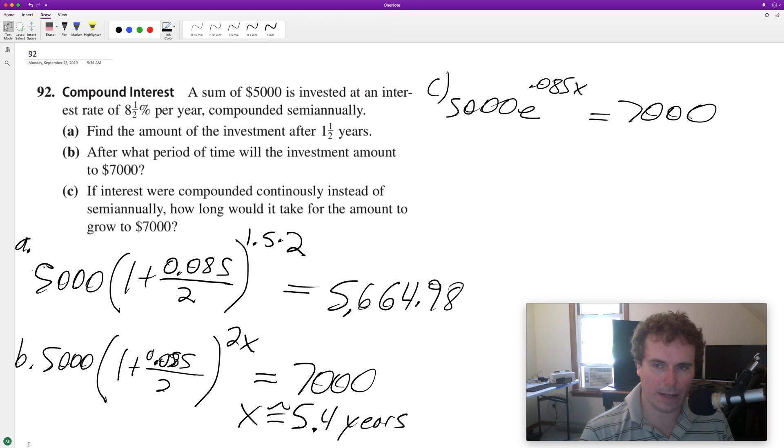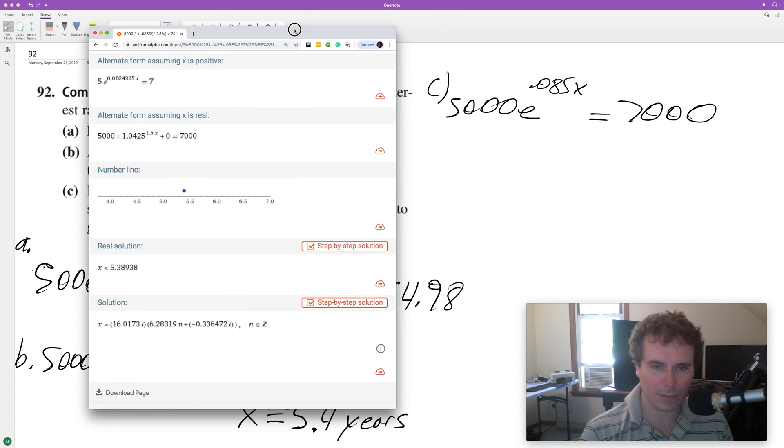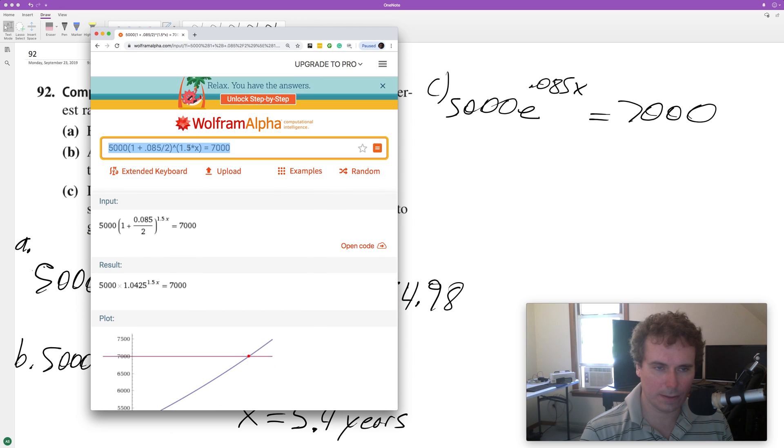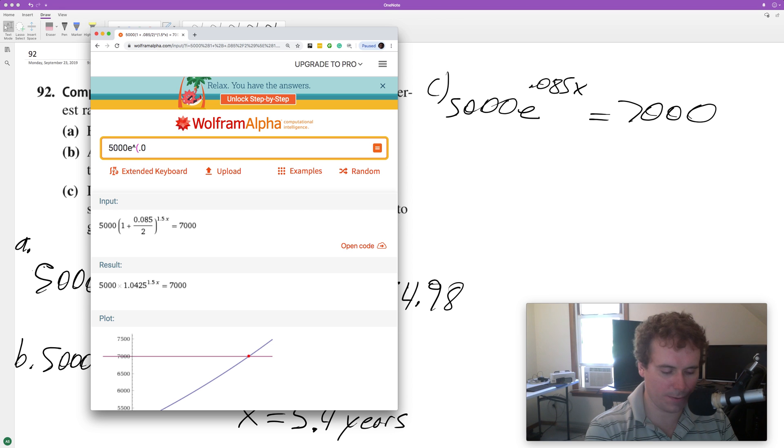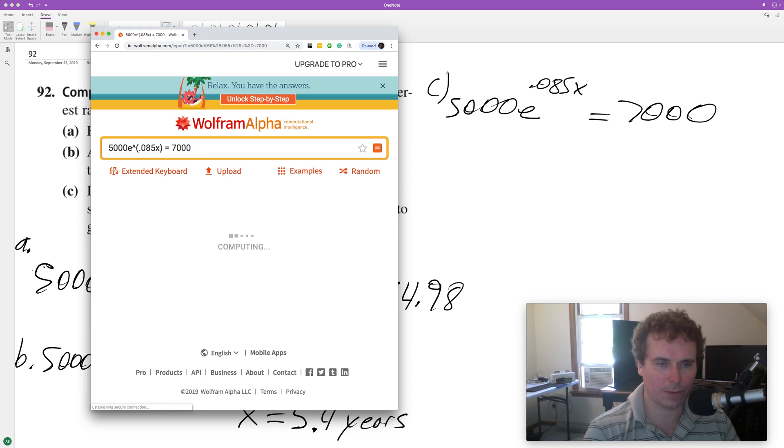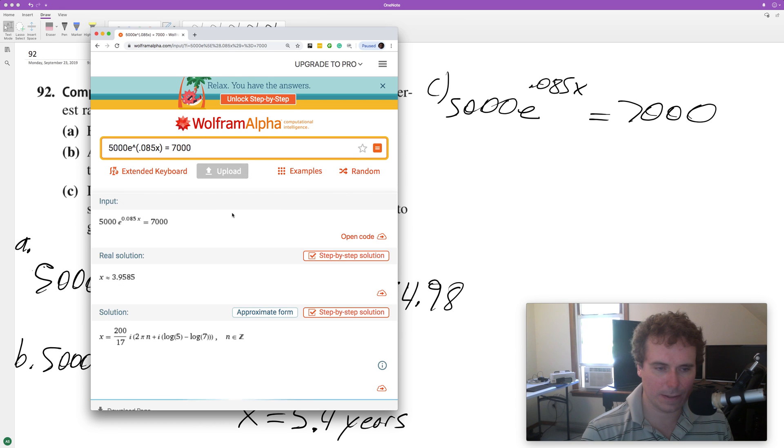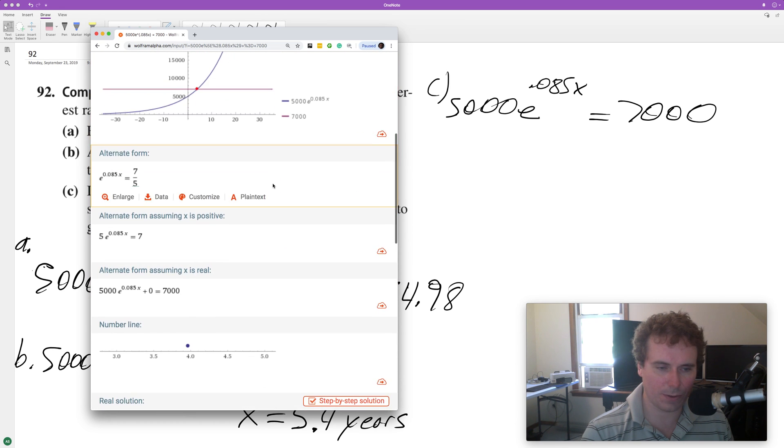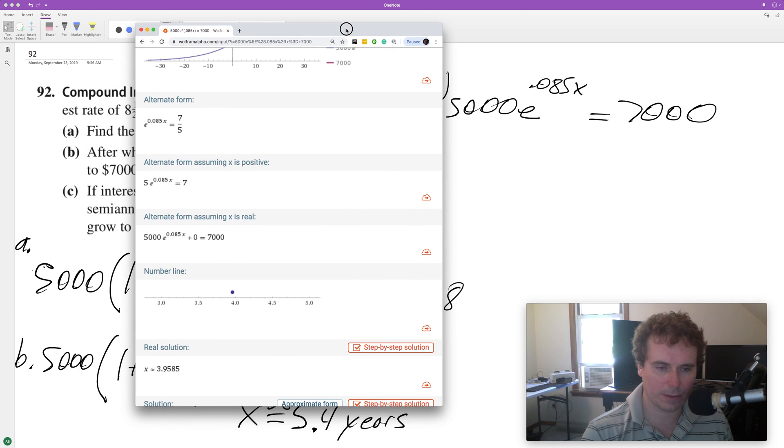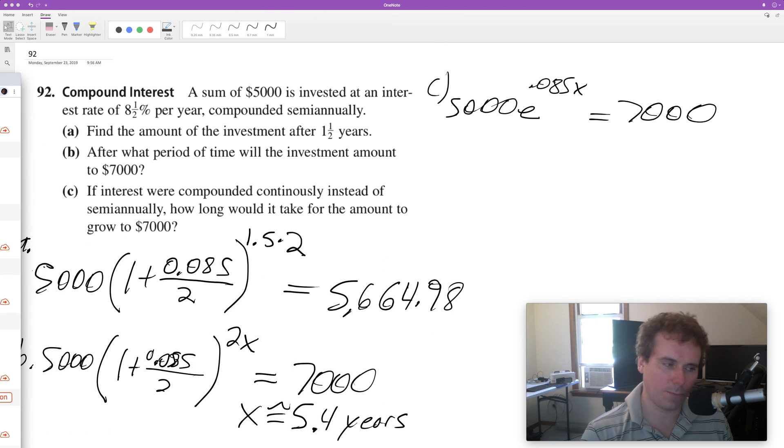For the last one, how long will that take? $5000 times e raised to the 0.085x equals $7000. That's 3.96 years, so it is shorter. You could round to 4 years.